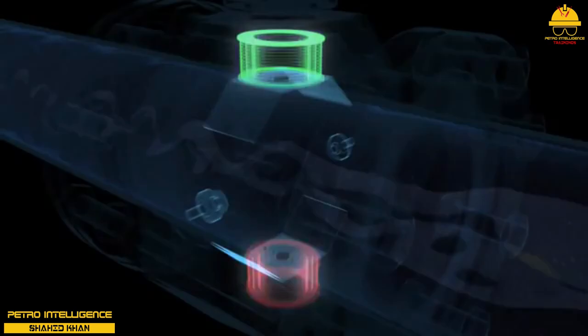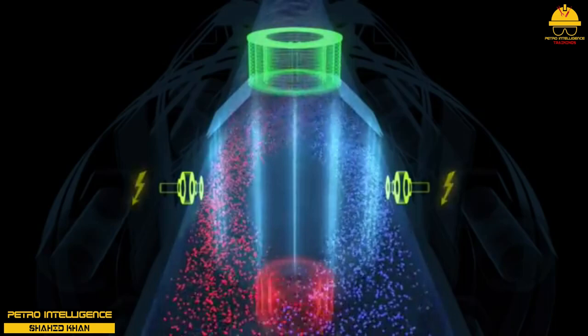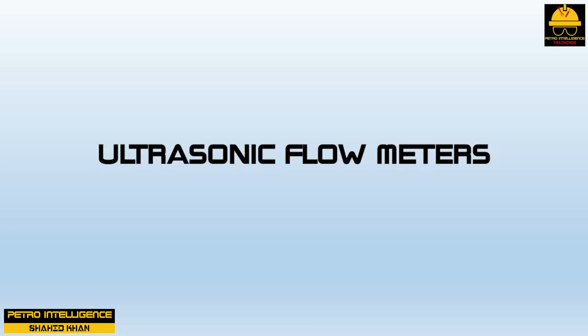Magnetic flow meters measure flow velocity based on the voltage created by the fluid flowing through a magnetic field. This type of meter is very effective for toxic or corrosive fluids because the fluid stream does not contact the measurement device.